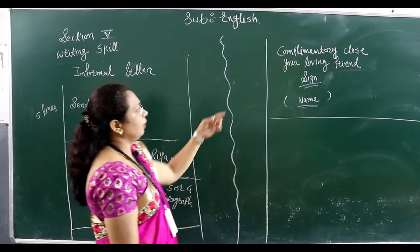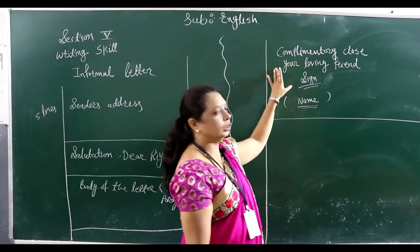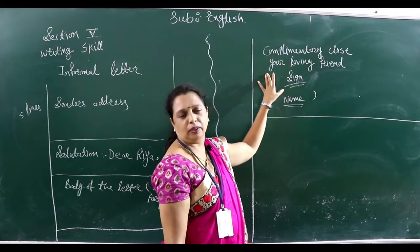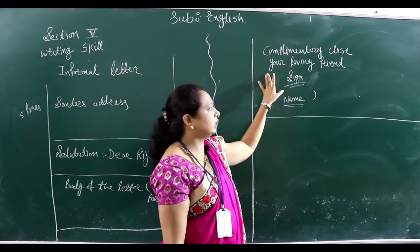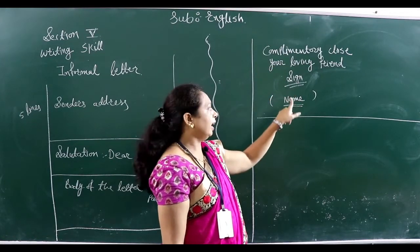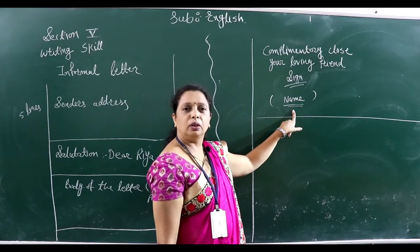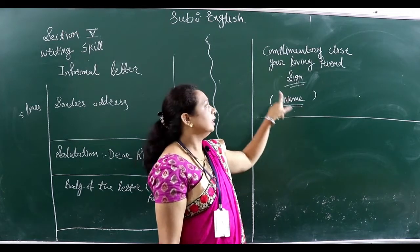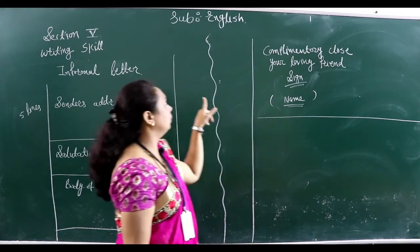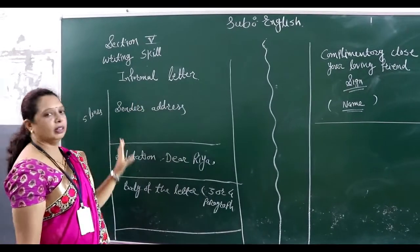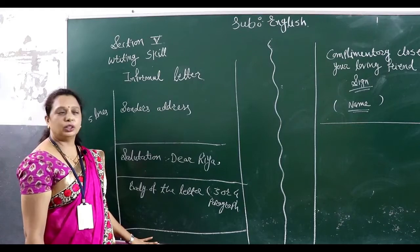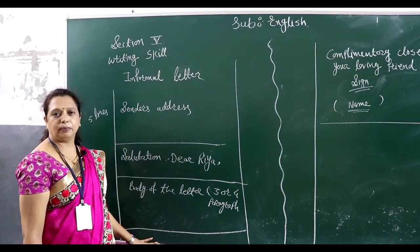After the body, leave one line and write your complimentary close — 'Your loving friend,' 'Your loving son,' and so on. After that, first sign, and then mention the name of the person writing the letter. These two points are also essential. Follow this format for informal letter writing, and you will achieve good marks in this letter writing pattern.